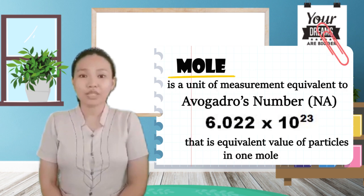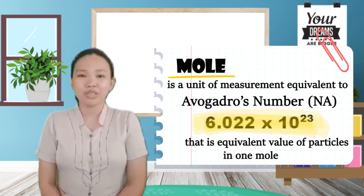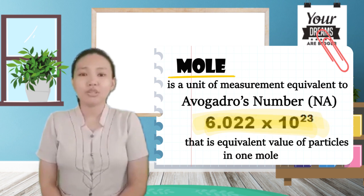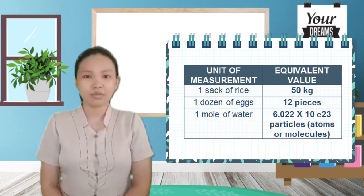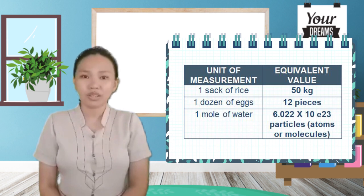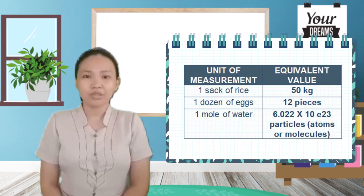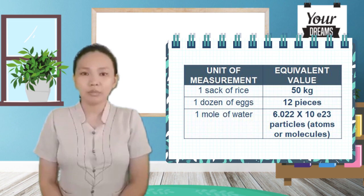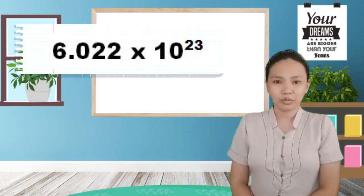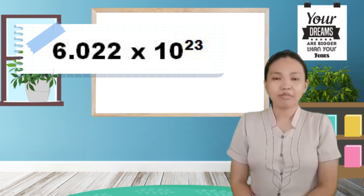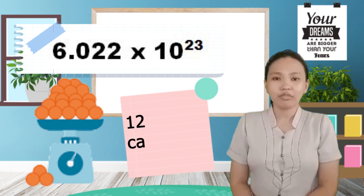A mole is a unit of measurement equivalent to Avogadro's number, which is 6.022 times 10 to the 23rd power — the number of particles in one mole. This value of 6.022 times 10 to the 23rd power is derived from the exact number of atoms in a 12-gram carbon-12 sample.